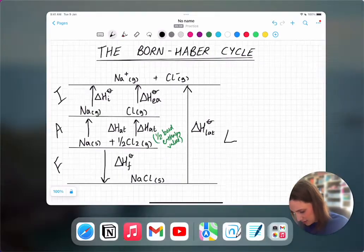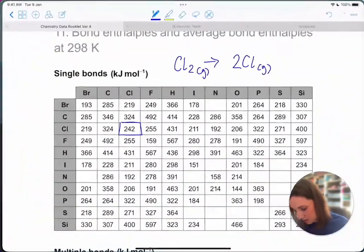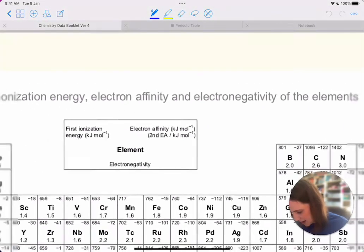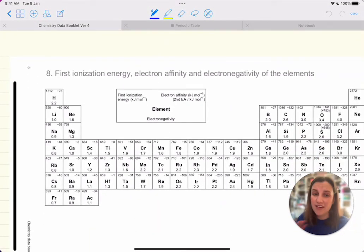These values, you saw them a little bit before, they also exist in the data booklet. You can find these in table 8. If you're new syllabus, I think they're in table 9 now, but the table looks almost identical to this one. So you can see that you've got the first ionization energy on the left hand side and then the electron affinity on the right hand side of the box.